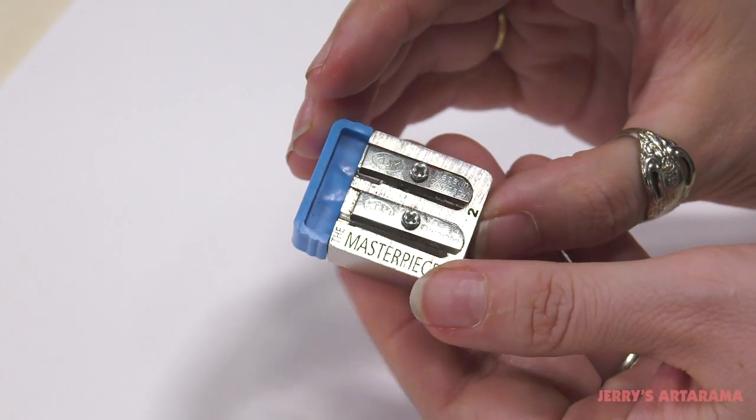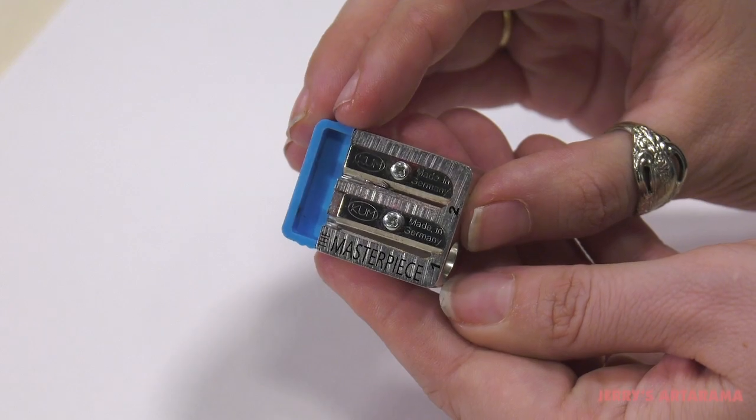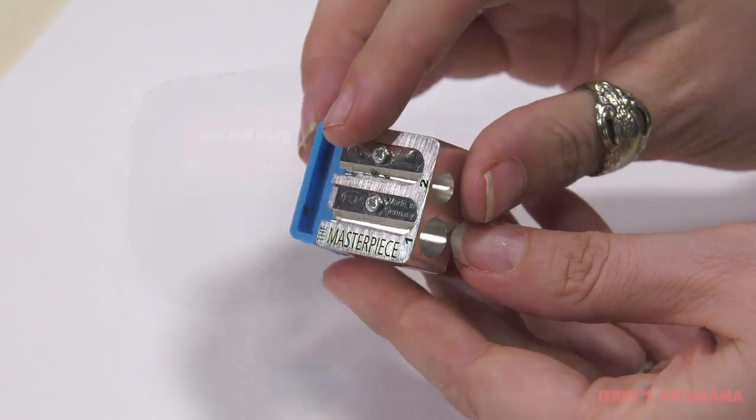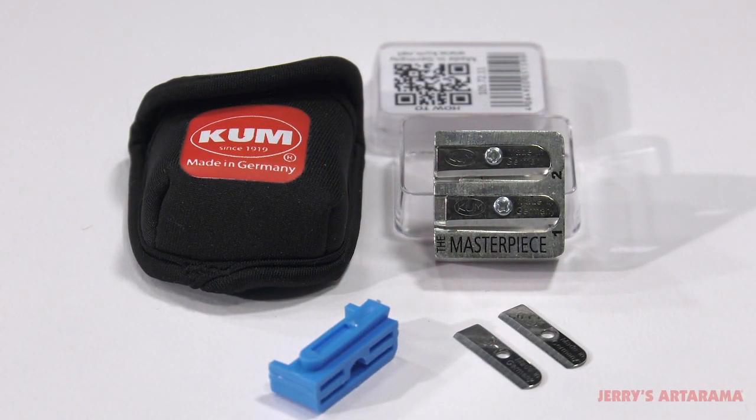The Kuhn Masterpiece Two-Hole Sharpener features a machined magnesium body and removable automatic break and comes with two replacement blades made from very hard, high carbon steel as well as a convenient storage pouch.